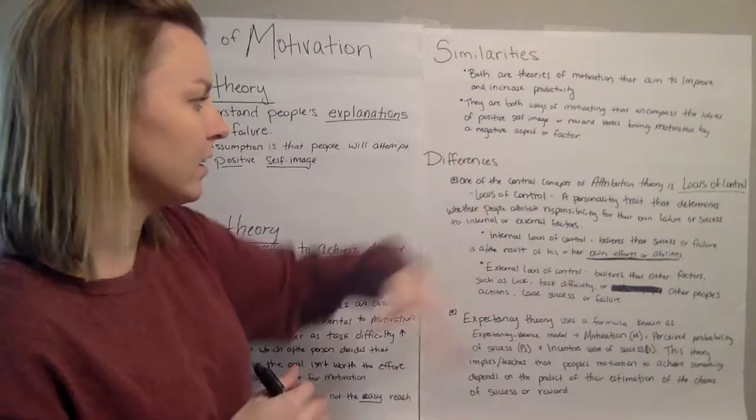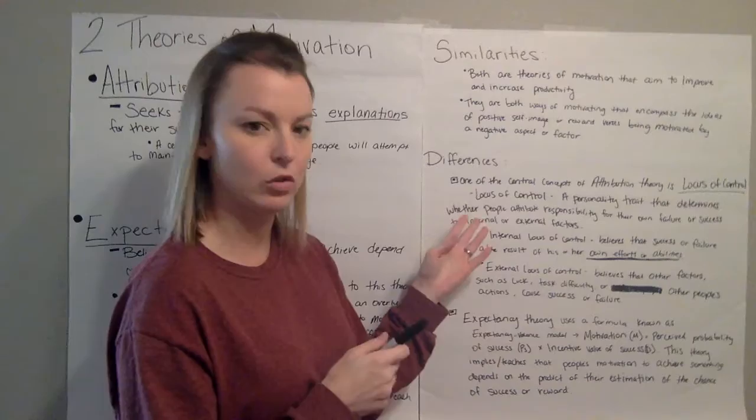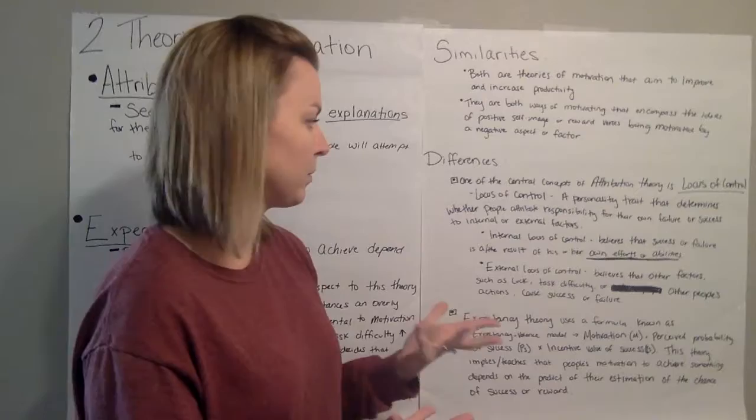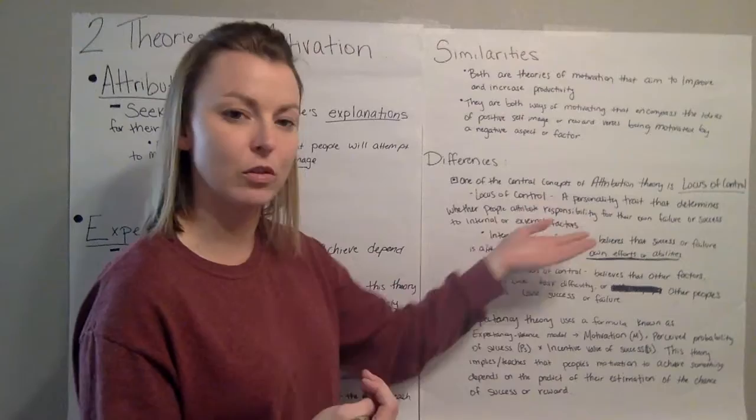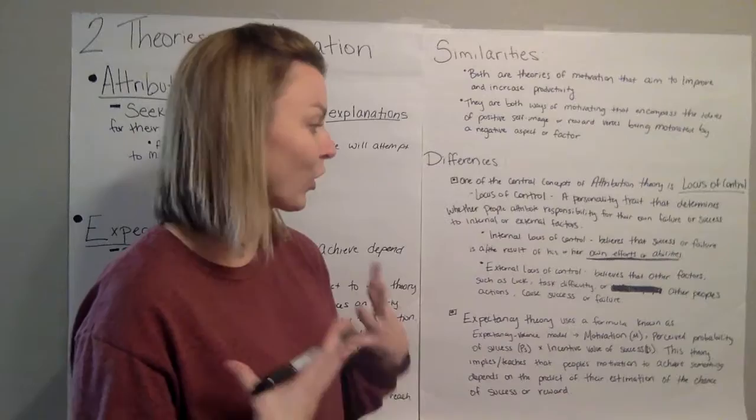And the differences, we can see where they have a lot of different content. Your attribution theory, one of the central concepts is called locus of control. And that is a personality trait that determines whether people attribute responsibility for their own success or failure to internal or external factors. And the internal locus of control is someone that believes success or failure is the result of his or her own efforts or abilities. So they shoulder those responsibilities for the success or the failure.